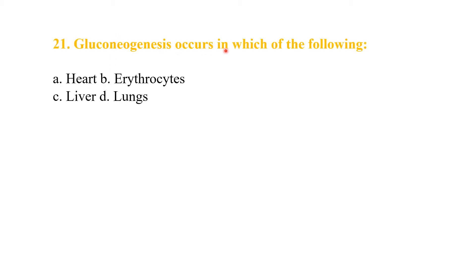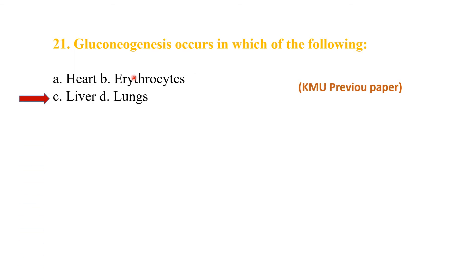Gluconeogenesis occurs in which of the following? Gluconeogenesis is the formation of glucose from amino acids or other non-carbohydrate sources. This process mainly occurs in the liver — the answer is the liver.